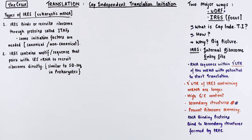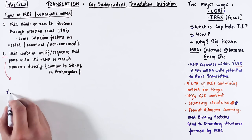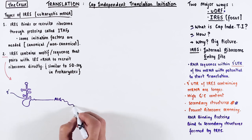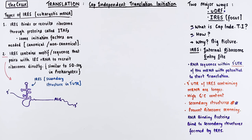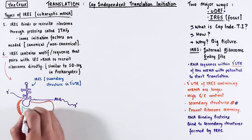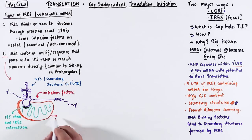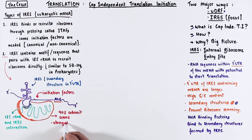The second type of internal ribosome entry site forms a strong secondary structure present in the 5' UTR. This structure is especially important because it pairs with the 18S ribosomal RNA present in the 40S subunit. This recruitment of the 40S subunit then further helps to recruit initiation factors. When this complex forms, the 40S subunit can scan for the start codon and enter the elongation phase of translation as usual. This second type of IRES is quite straightforward.